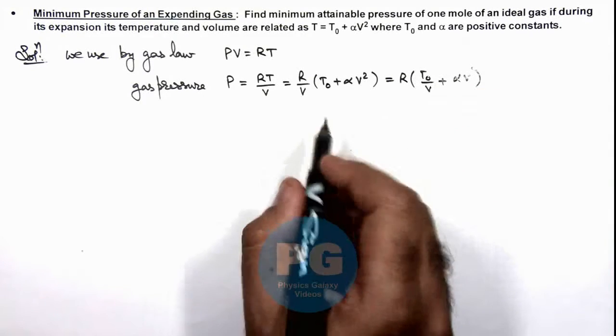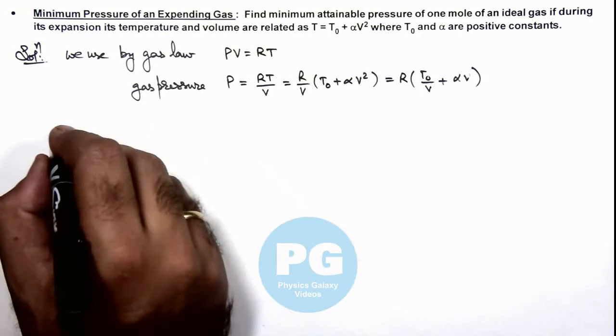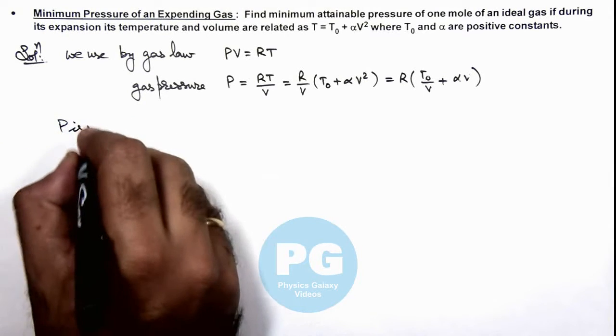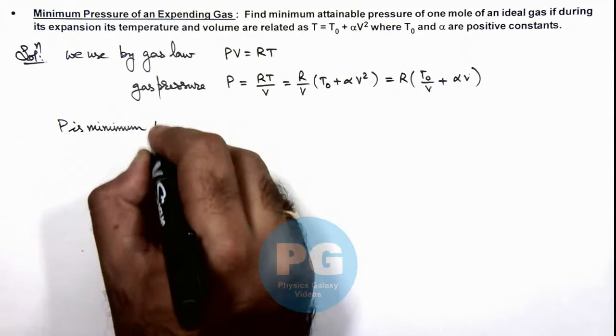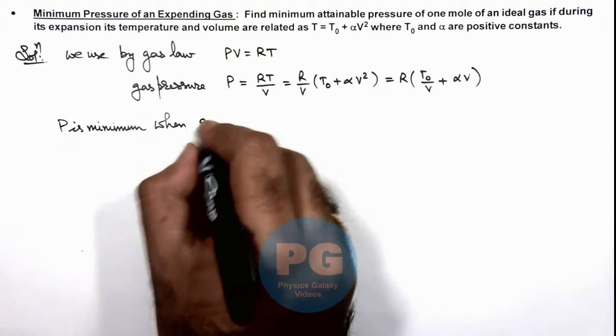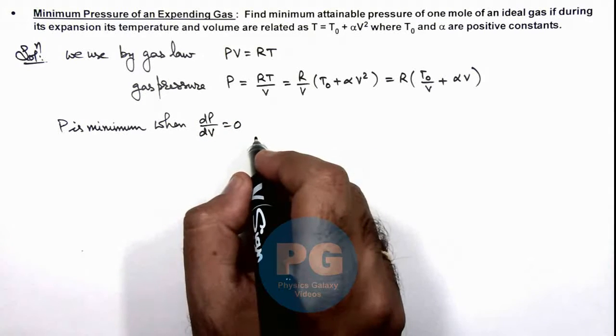Here we can see that gas pressure depends on the volume of gas. We can write P is minimum when dP/dV = 0. Here we'll use the concept of maxima and minima to find the minimum pressure.